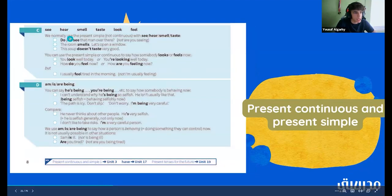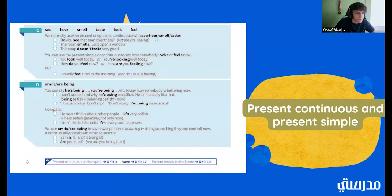So, now we have see, hear, smell, taste, look, feel. So, these are all of the senses. So, we normally use the present simple with see, hear, smell, taste. So, for example, do you see that man over there? Or, the room smells, let's open a window. Or, this soup doesn't taste very good. And, you can use the present simple or continuous to say how somebody looks or feels now. So, you look well today. Or, you're looking well today. How do you feel now? Or, how are you feeling now? And then, we could also have something like, I usually feel tired in the morning. That could be like an answer.